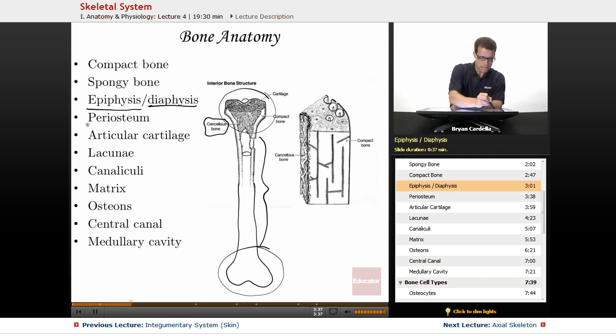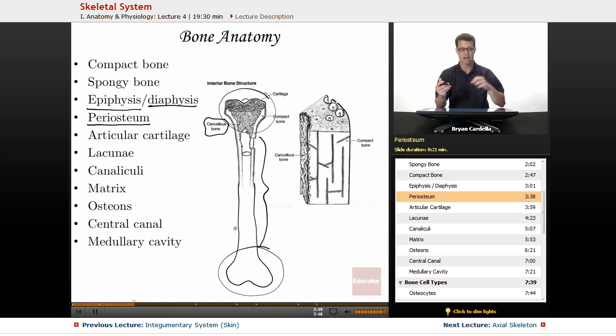The periosteum is a term for the outer layer of bone. And it's going to be most obvious in the section of the diaphysis. The outer layer that you're going to have ligaments being attached to. The part that you'd be holding if you actually had your hands around the diaphysis, you're touching the periosteum.